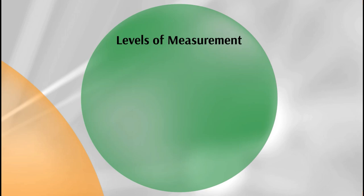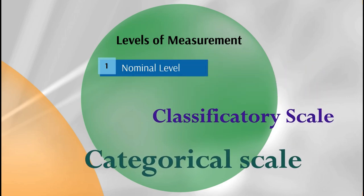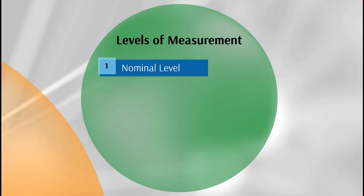We have nominal data or nominal level, also known as the classificatory scale or categorical scale. The nominal level is the weakest level of measurement where numbers or symbols are used simply for categorizing subjects into different groups.